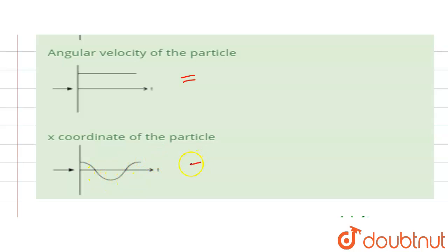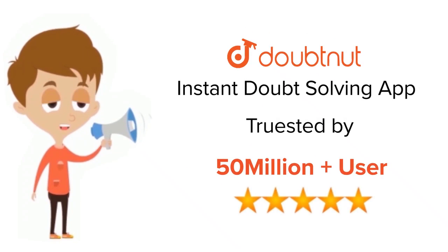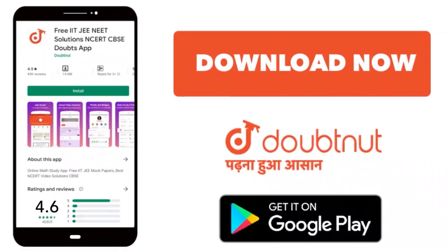then maximum. So that means this is also right. This is the solution of this question. Guys, thank you. For class 6 to 12, IIT-JEE and NEET level, trusted by more than 5 crore students, download Doubtnut app today.